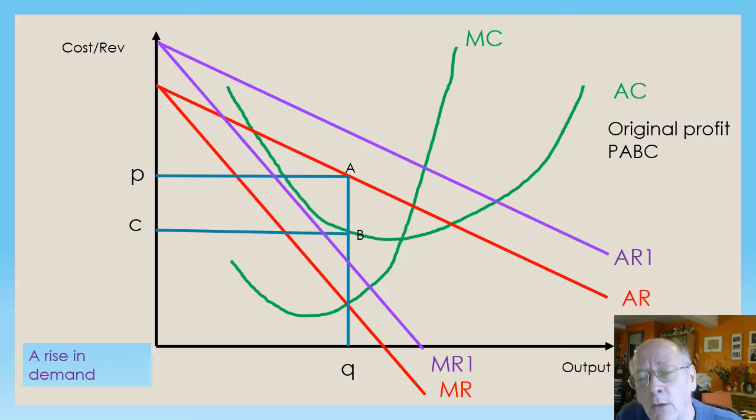A quick exam point. The examiners say you must use black ink when you're doing an answer. Can I strongly suggest you ignore this and you bring in two colors into the exam room? This is a complex diagram. Without the colors, you could easily find yourself getting confused.